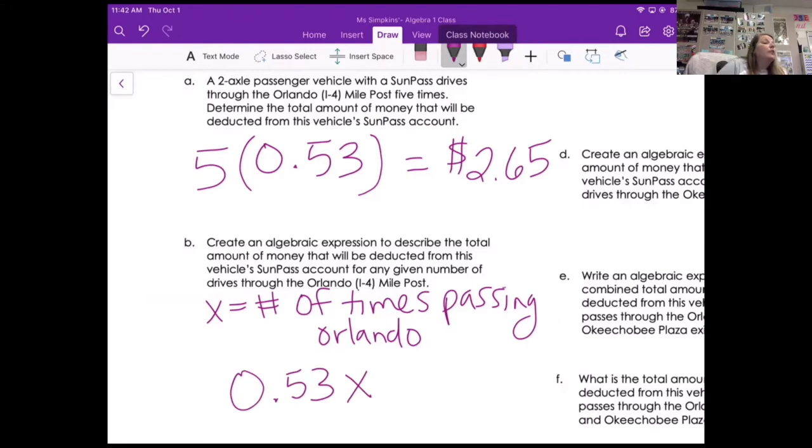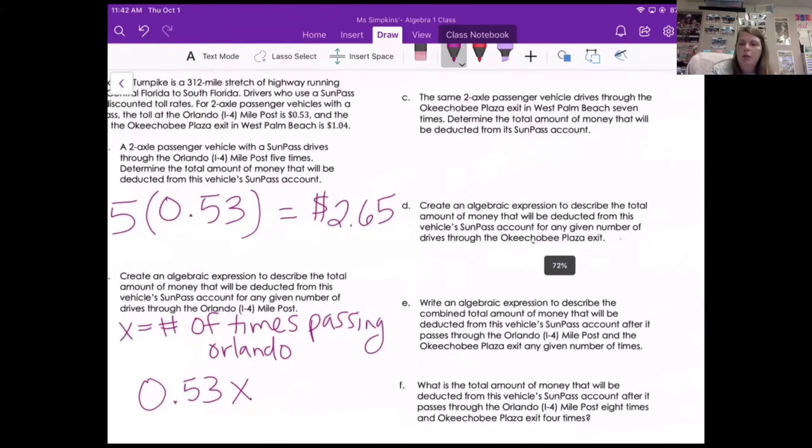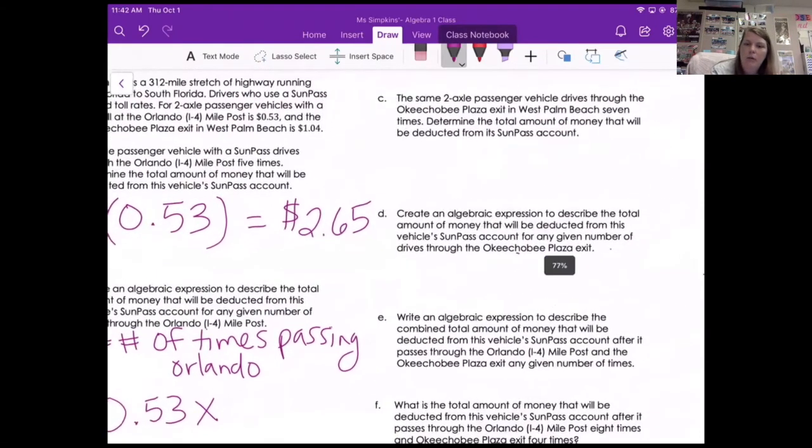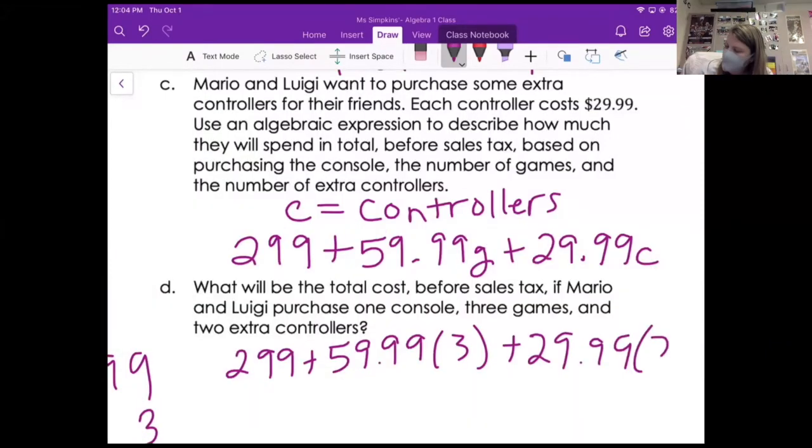So I would like you to try C and D. Those two questions are asking the same thing, but instead of the Orlando toll, it's asking about the other toll, the Okeechobee toll. Digital students, I want you to send me your answer to C in the chat whenever you get your answer, please. You're answering C and D.